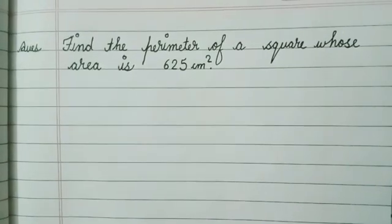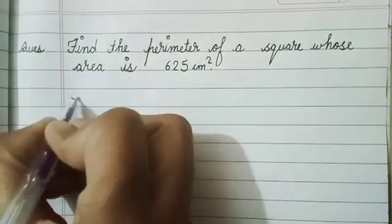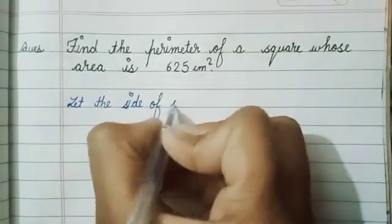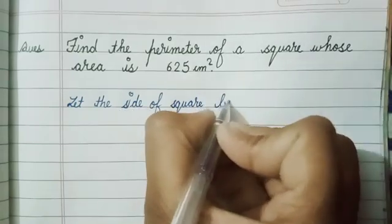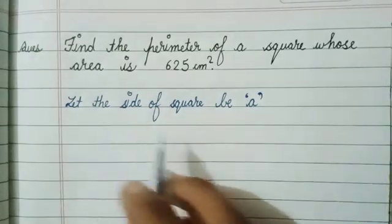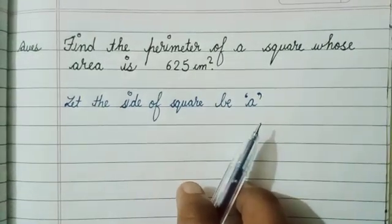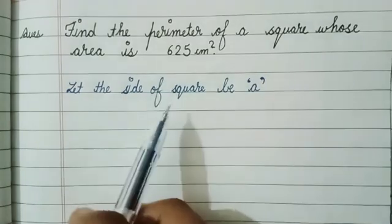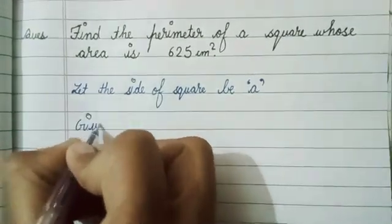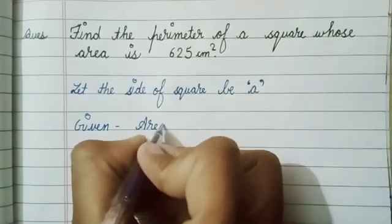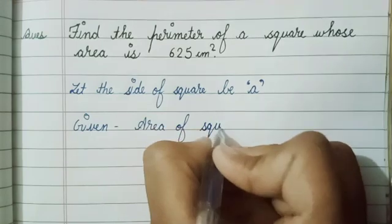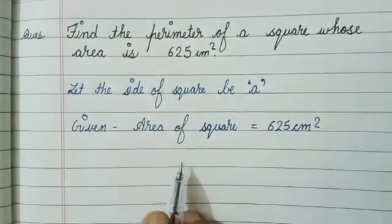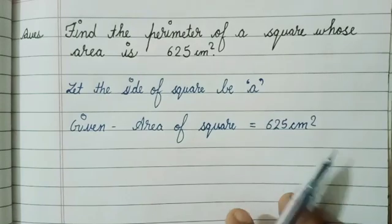Let's start the solution. First, we let the side of the square be a. Given that the area of the square is equal to 625 centimeter square.